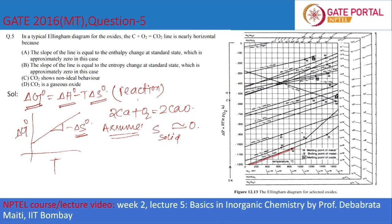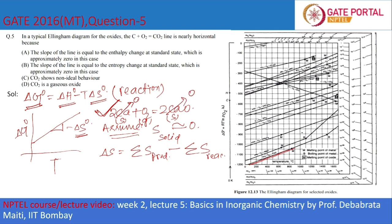For any reaction, the entropy change equals the sum of entropy of products minus the sum of entropy of reactants. For 2Ca + O₂ → 2CaO, Ca and CaO are solids (entropy ≈ 0), so ΔS° = 0 minus entropy of O₂, which is some positive value. Therefore ΔS° is negative, and because of the negative sign in the slope formula, the slope is positive, as seen in the diagram.